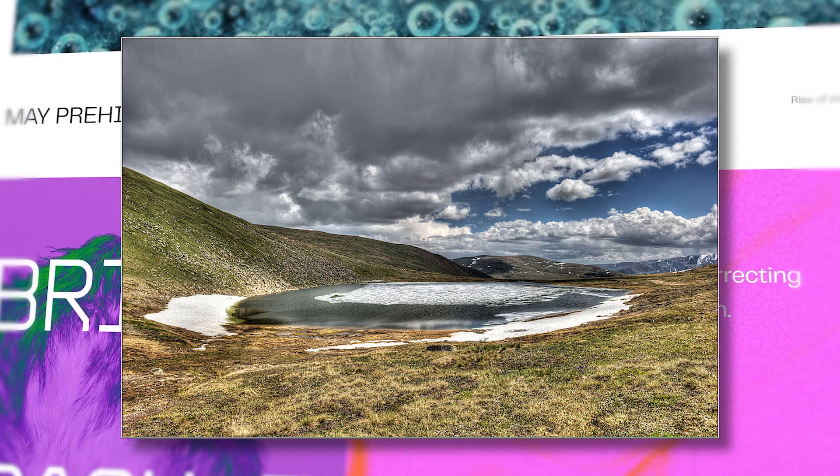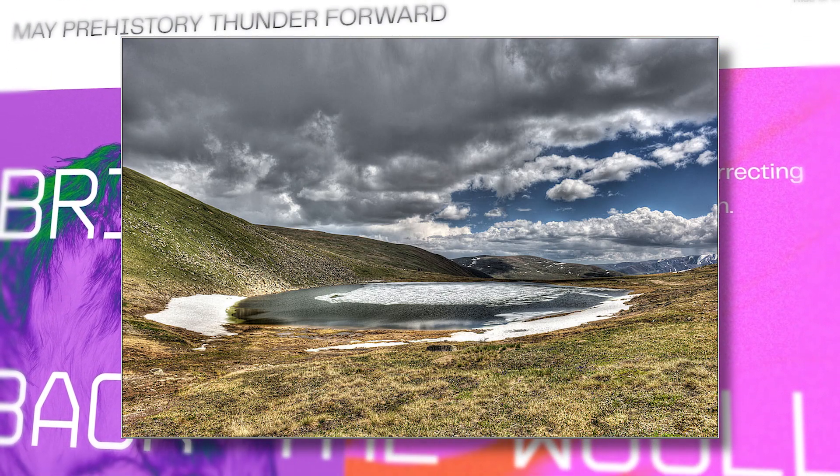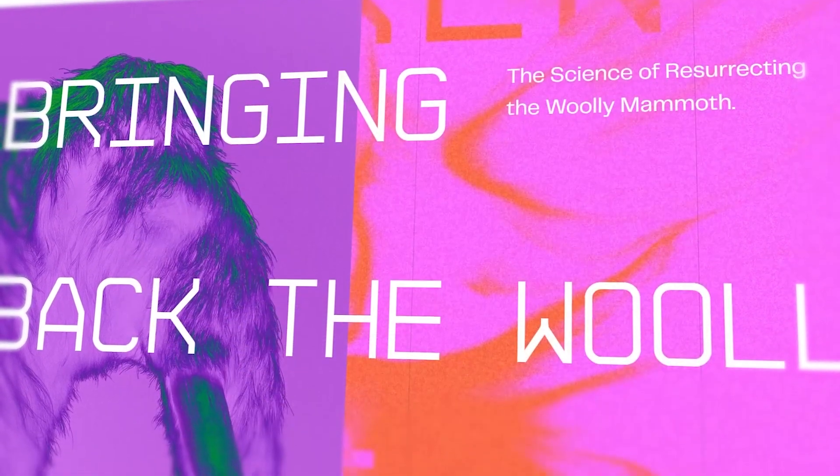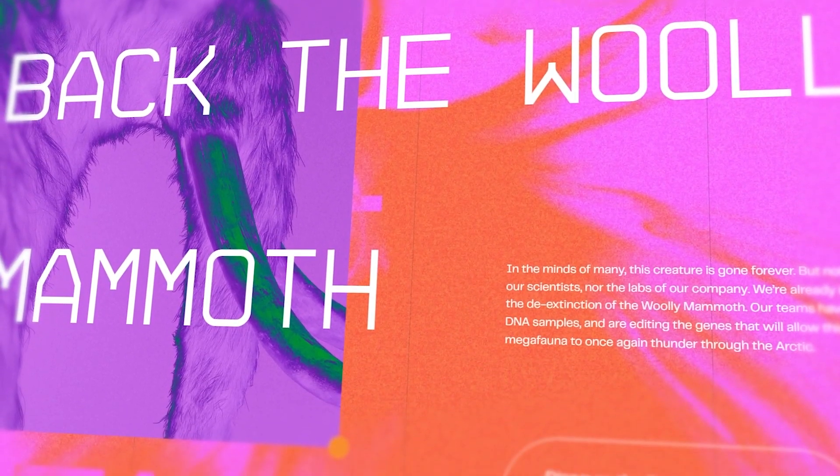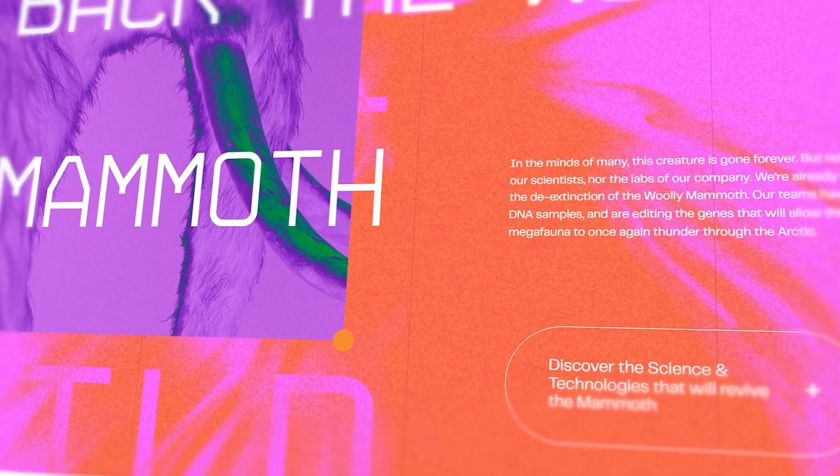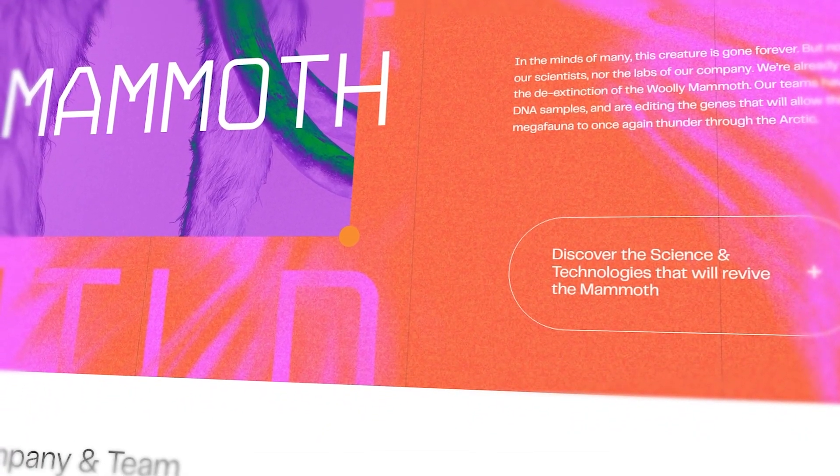The plan is to revive the ancient mammoth steppe, a biome that spans from Russia to North America consisting of dozens of unique plants that are currently degrading due to human interference. Hopefully, with the reintroduction of a woolly elephant, the mammoth steppe can thrive once more.